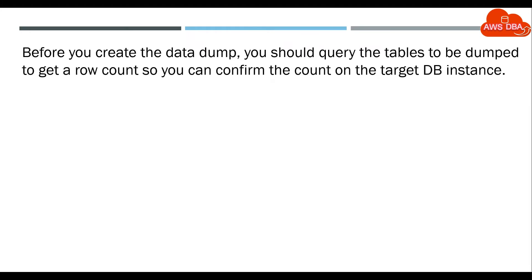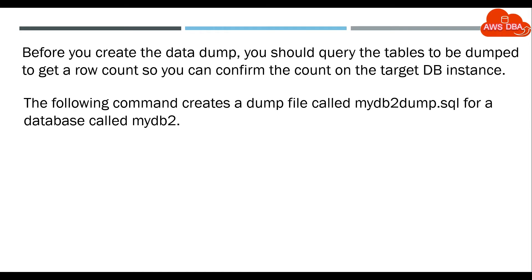Before you create the data dump, you should query the tables to be dumped to get a row count so you can confirm the count on the target DB instance. The following command creates a dump file called mid2dump.sql for a database called mid2: pg_dump -Fname=mid2 -f mid2dump.sql